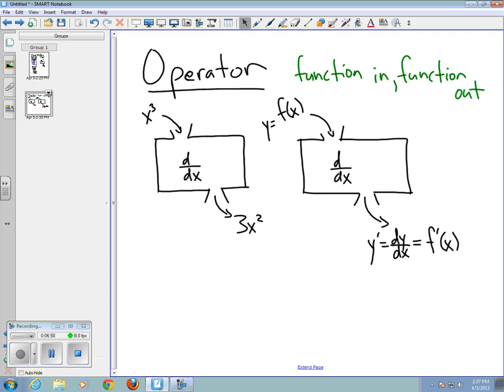You could also think of the second derivative as an operator. So, if we were thinking of the second derivative, then we'd have d²/dx². So, if we were to put into that x³, then the output would actually be the second derivative, which would be 6x.